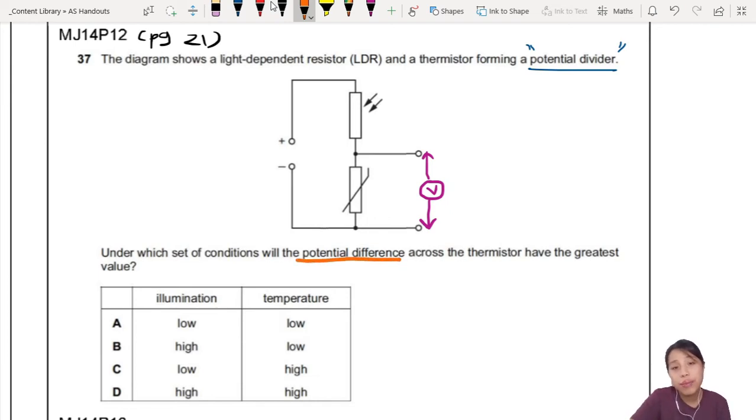Potential difference, if say for example this is 9 volts. Then your 9 volts will be divided across these two. If this one is 3 volts, this one is 6 volts. If this one is 4.5 volts, this one is 4.5 volts. Maximum only 9 volts. So they have to share out according to their resistance.